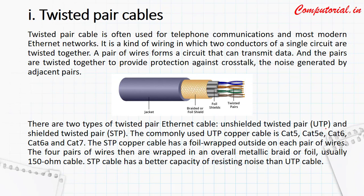The types we mostly use in computer labs, home networking, and office networking include categories like Cat-5, Cat-5E, Cat-6, Cat-6A, and Cat-7. Just as mobile phones have various models and configurations, cables also have various variations available in the market. You should know the names of these twisted pair cable categories.